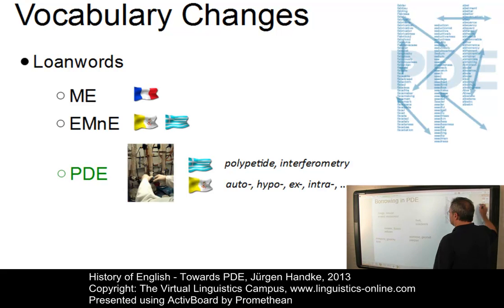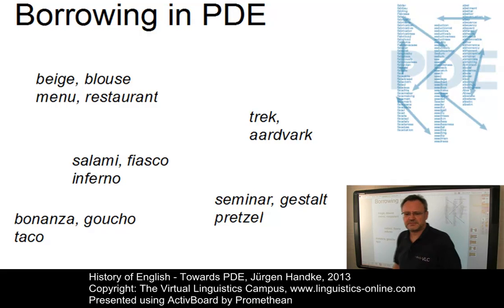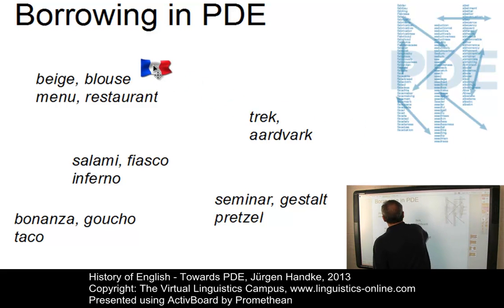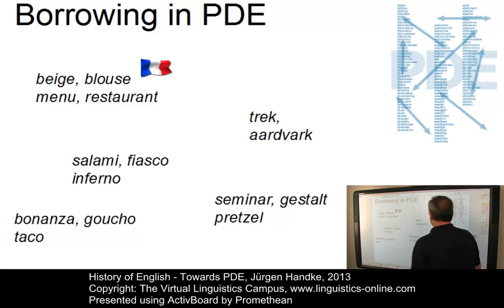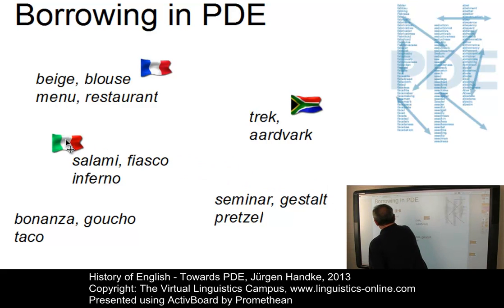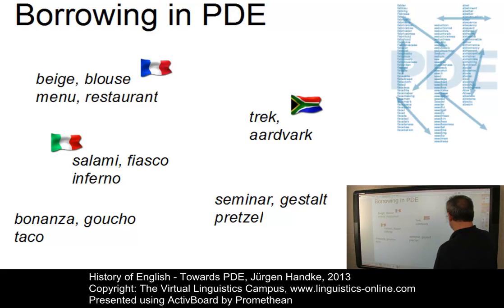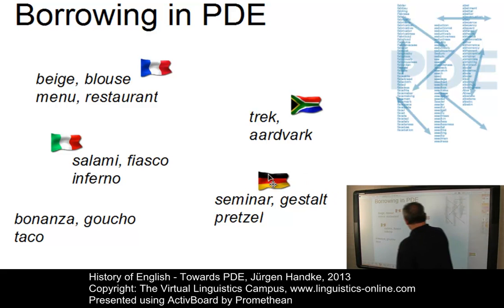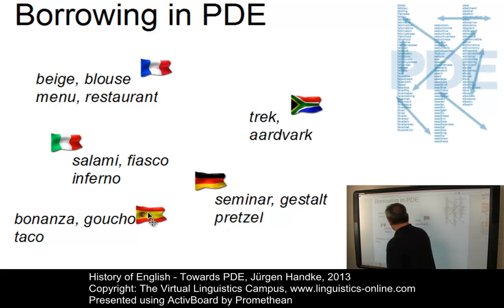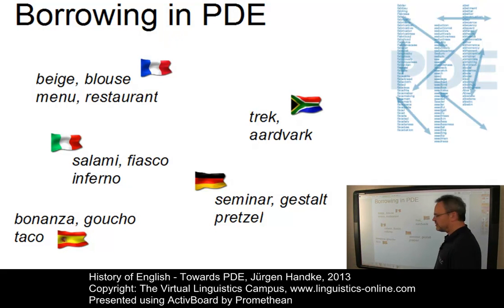Beyond these scientific borrowings, present-day English has borrowed freely from other languages — for example, from French: words such as beige, blouse, menu, or restaurant; from Afrikaans: trek, aardvark; from Italian: salami, fiasco, inferno; from German: seminar, gestalt, pretzel; and last but not least, words from Spanish such as bonanza, gaucho, or taco.